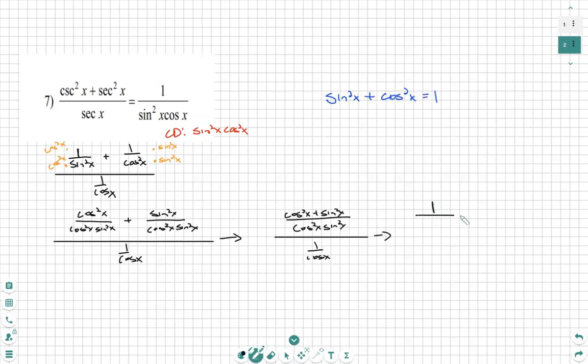So we clean up even further. 1 over cosine squared times sine squared, all over 1 over cosine of x.